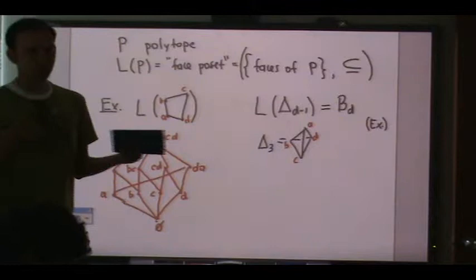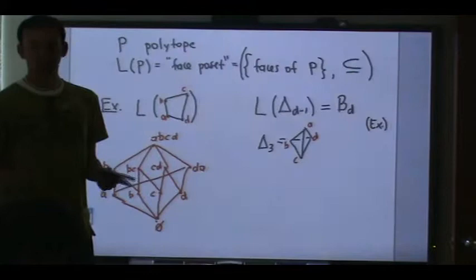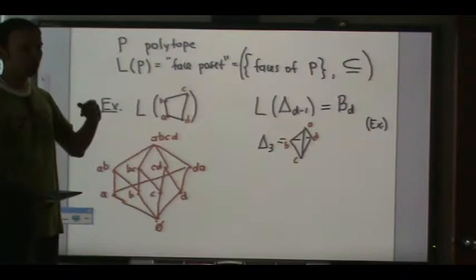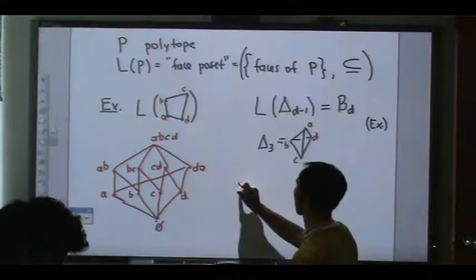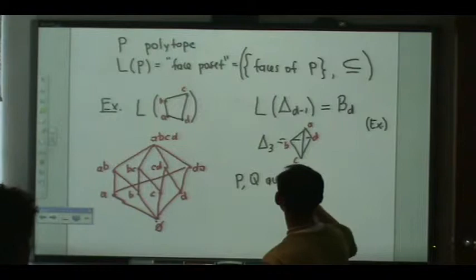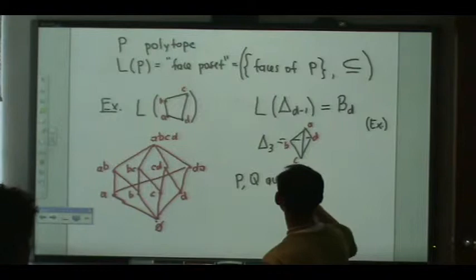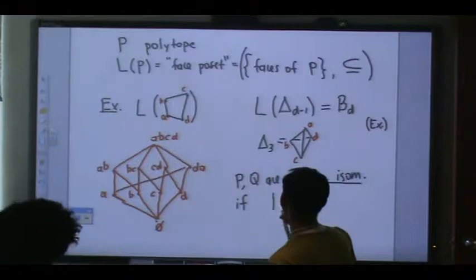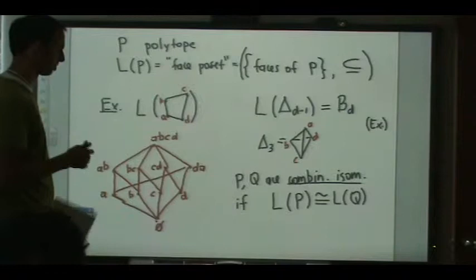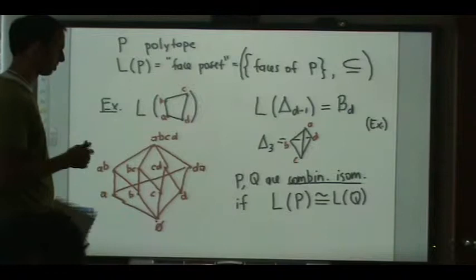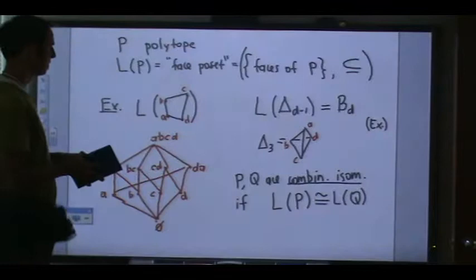Now I can tell you what it means to be combinatorially equivalent. Two polytopes are said to be combinatorially isomorphic if they have the same face poset. The combinatorics is encoded in this poset — when you look at this picture you don't care about coordinates, just the relative incidence of the faces. So p and q are combinatorially isomorphic if they have the same face poset.